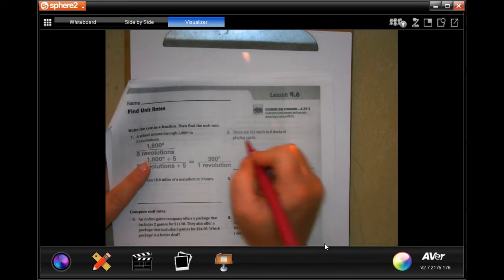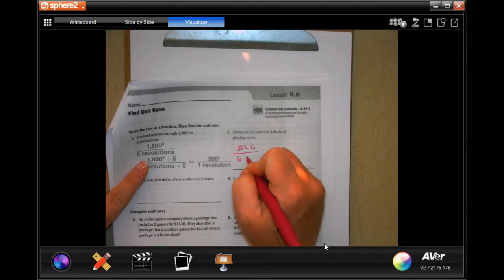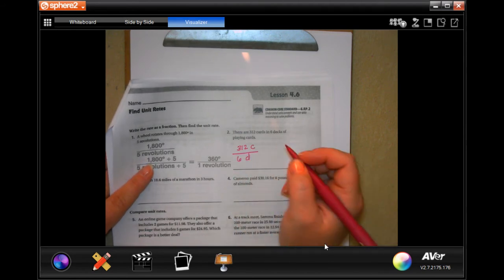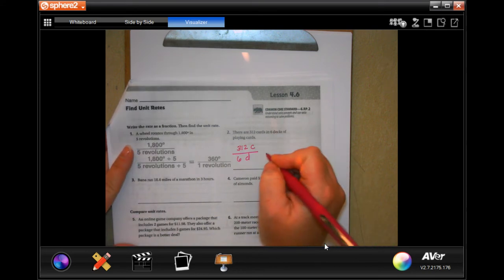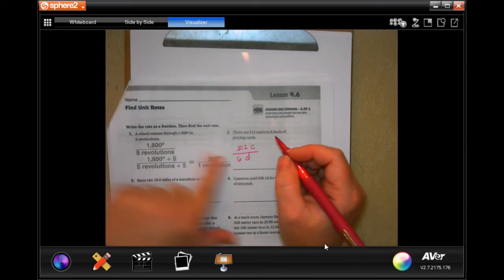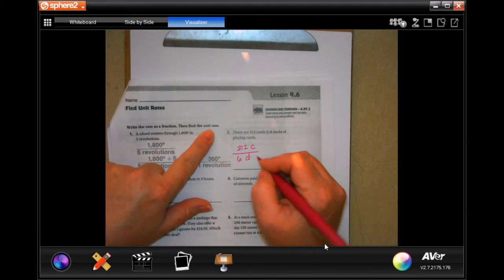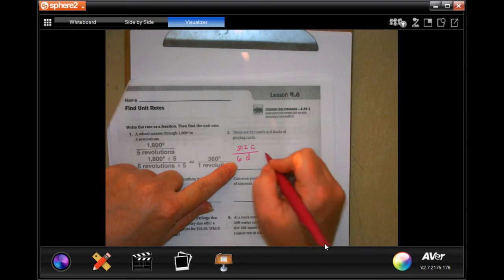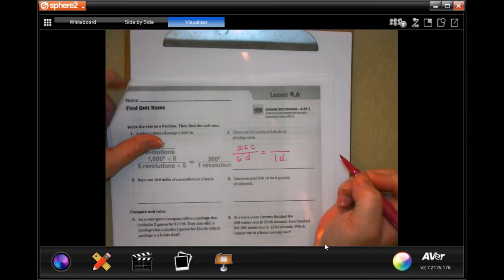So I'm going to write down the ratio. There are 312 cards in 6 decks. So 312, I'm just going to put C for cards, and 6 decks, I'm going to put D. It wants you to reduce these, write them as a fraction, which is what I did, then find the unit rate. So that means in one deck, how many cards are there.